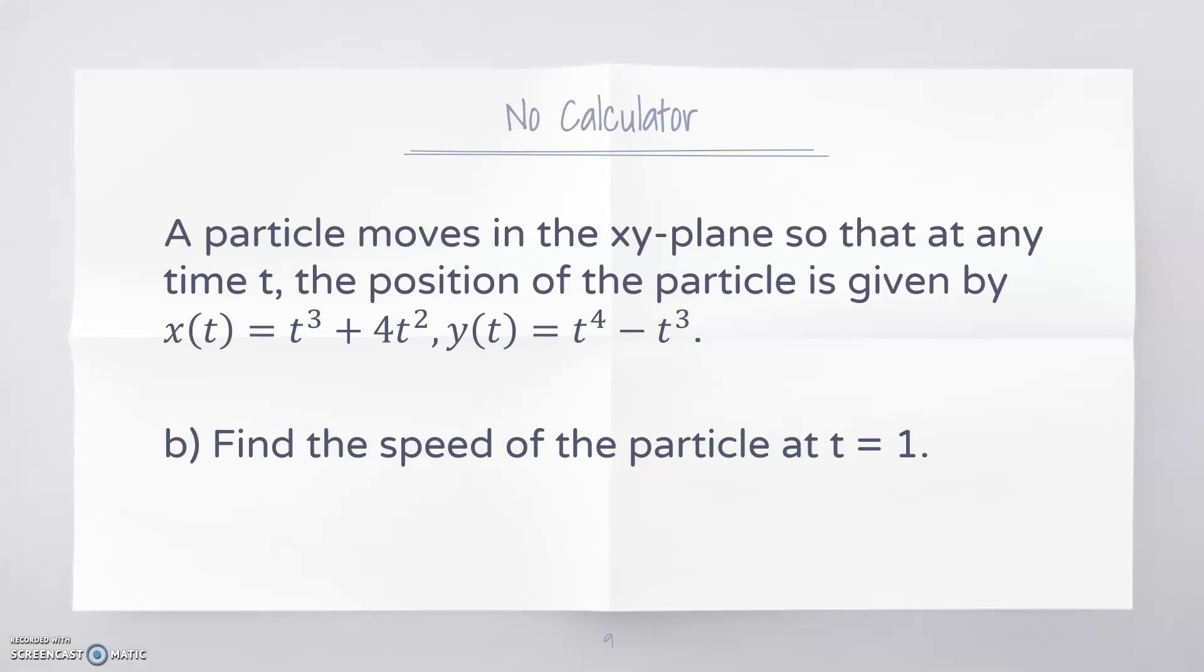Find the speed of the particle at t = 1. We have the velocity vector ⟨11, 1⟩, so the speed would be the magnitude of that. It would be √(121 + 1), so the speed would be √122.